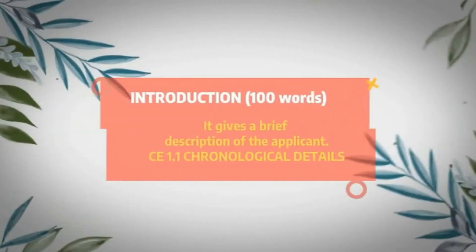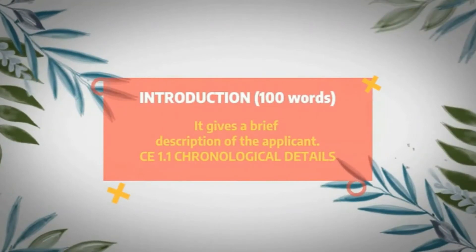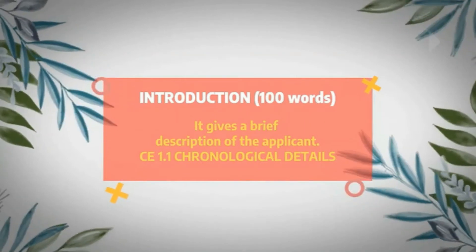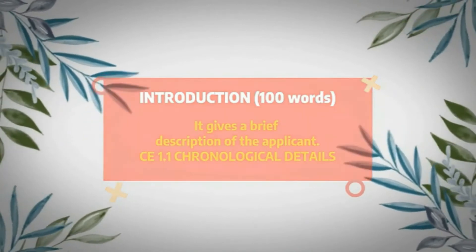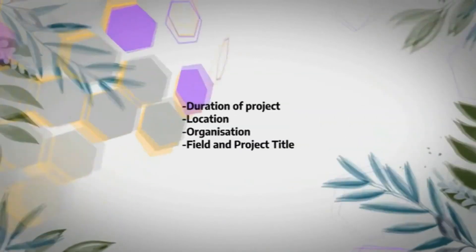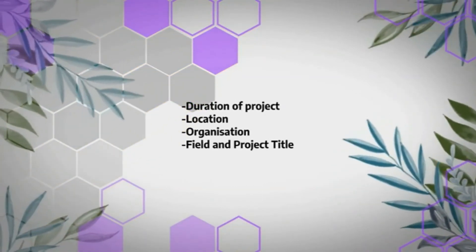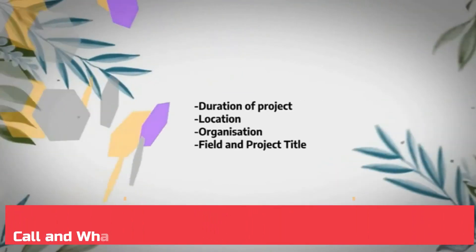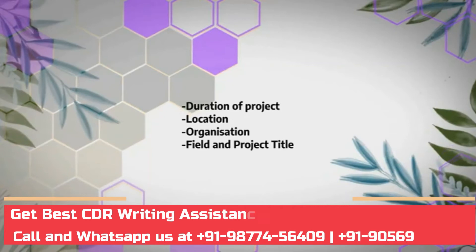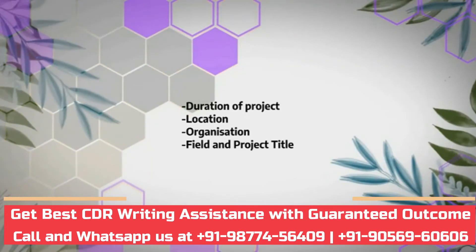The total word limit for a career episode is 1,000 to 2,500 words. The first section, the introduction, should be only 100 words and gives a brief description of the applicant. You will write chronological details covering the duration of the project, the location or organization where you worked, the engineering field — whether mechanical, electrical, electronics, or other — and the project title.